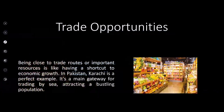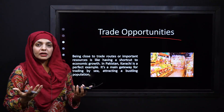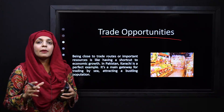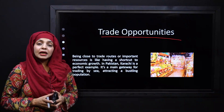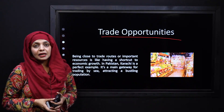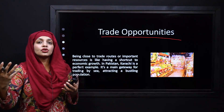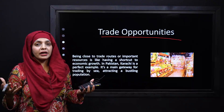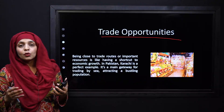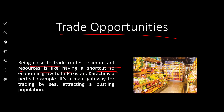Next is trade opportunities. Where there are more trading opportunities — the ability to trade between regions or countries — people will always settle in that area. In the past, people settled near rivers partly because rivers allowed them to transport goods from one place to another. Being close to trade routes or important resources is like having a shortcut to economic growth. In Pakistan, Karachi is a perfect example: it is the main gateway for trade by sea, attracting a large, bustling population.